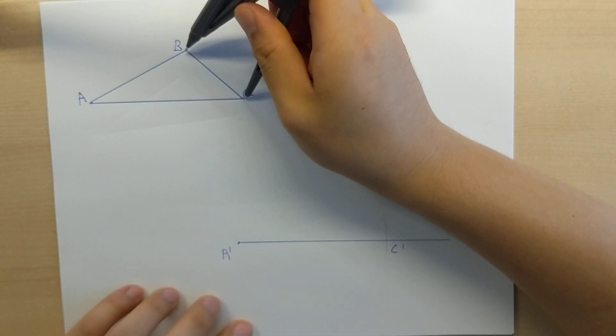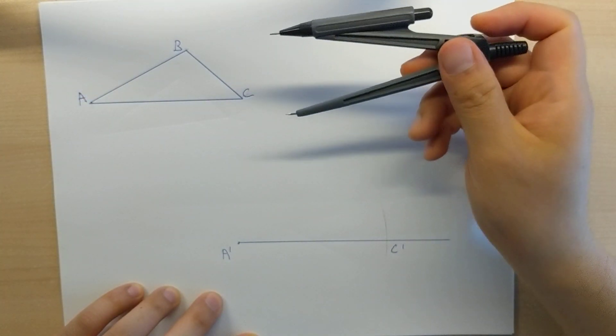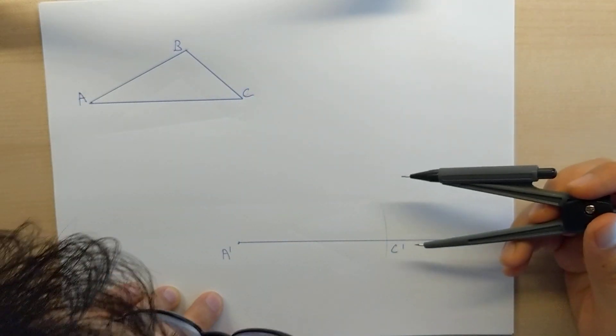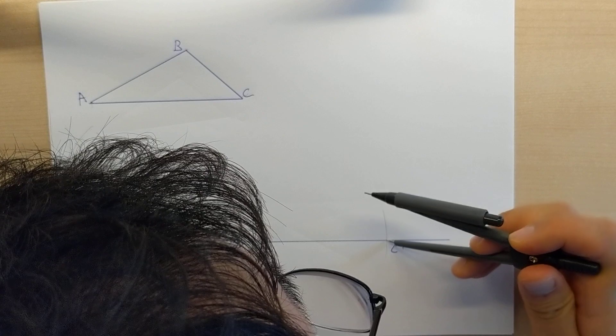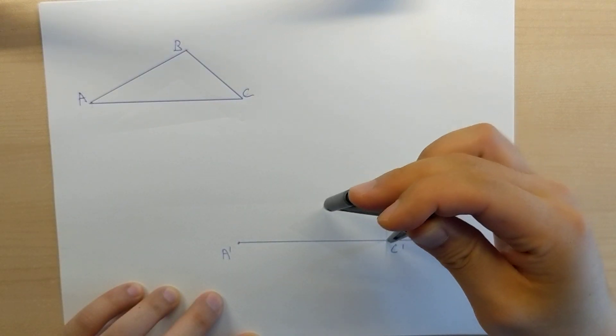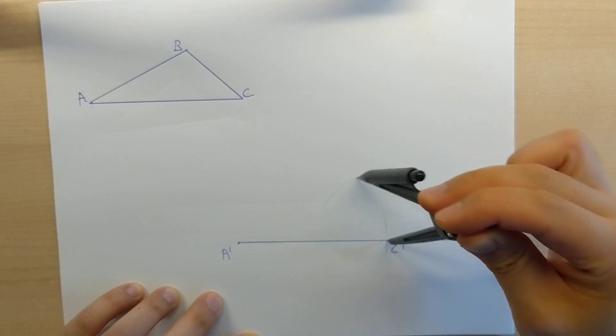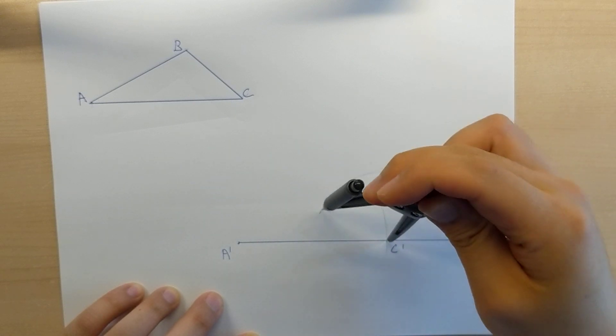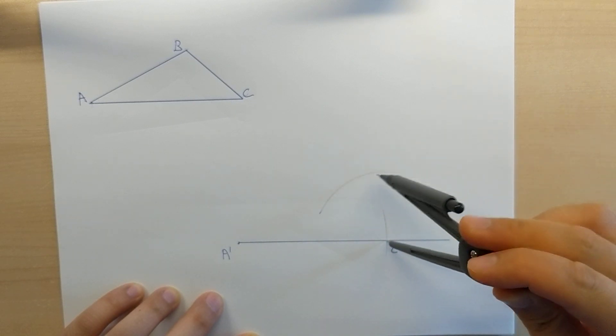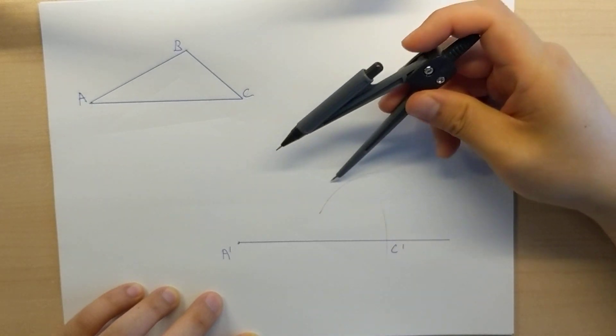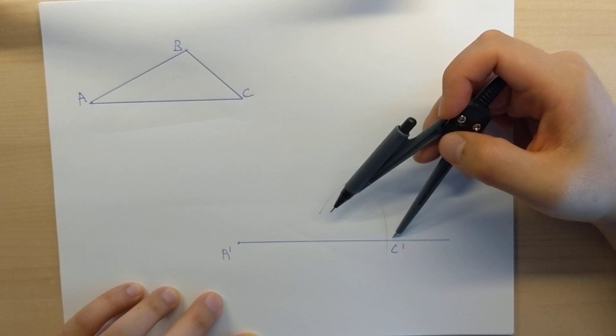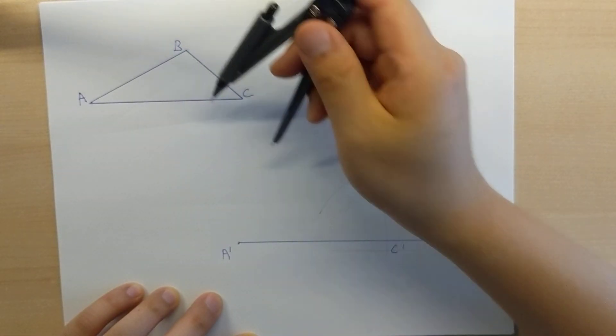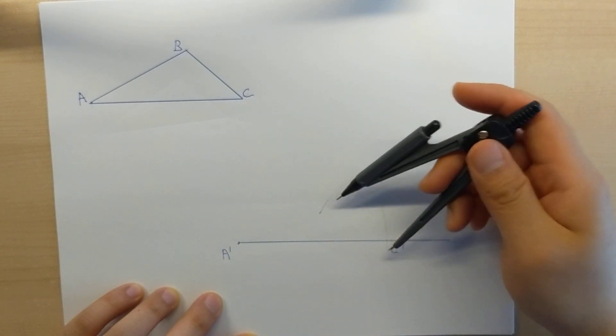And what I do is I'm going to pick up the compass setting, this length of BC, and I'm going to place it on C prime. And I am going to draw myself an arc like so. All the points that are on this arc is going to be a length of BC away from C prime. So, all the points on the arc is going to be that length away.